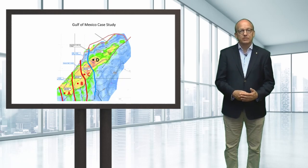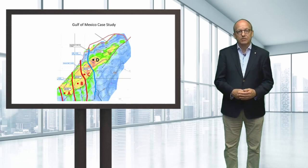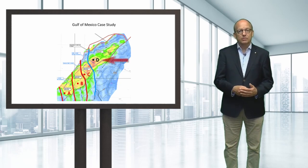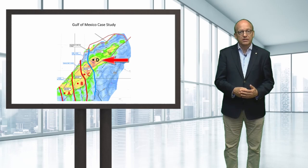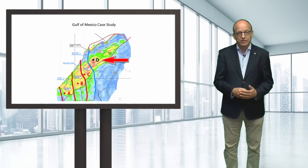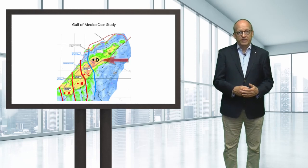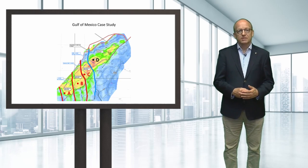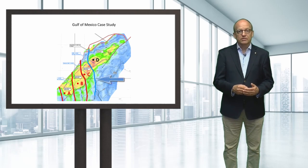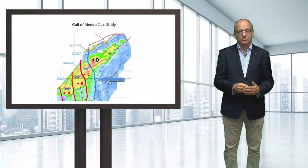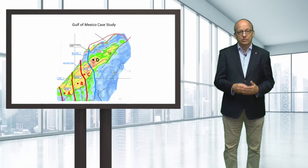Let's have a look at the following Gulf of Mexico example to help guide our thinking. For this field, only block D has been penetrated by a well and demonstrated commercial flow rates. A final investment decision has been taken for the full field development for all four fault blocks. The blue fault separates the drilled block D from the other undrilled blocks. The question is: can we book reserves in the undrilled fault blocks?